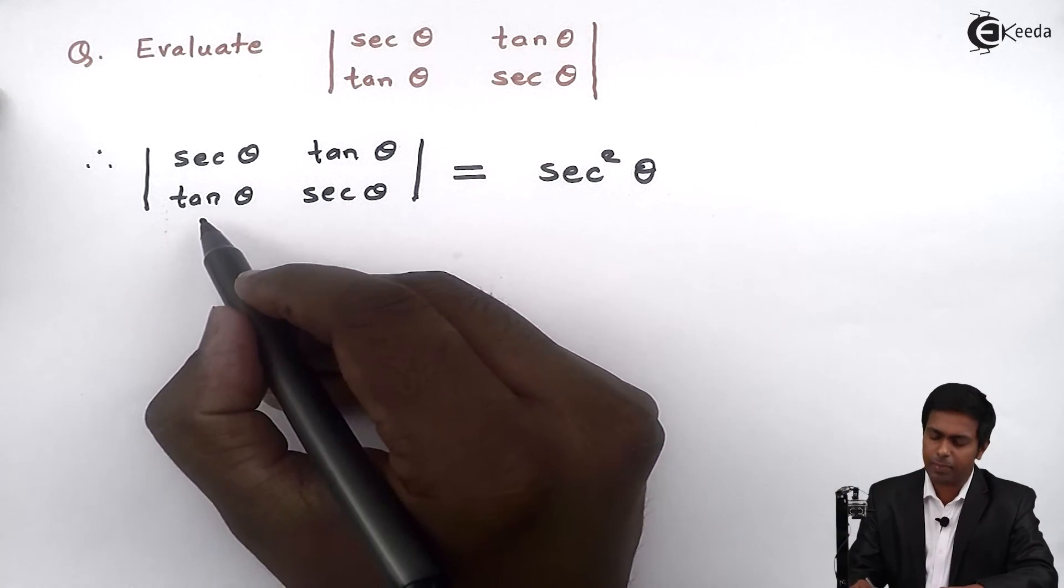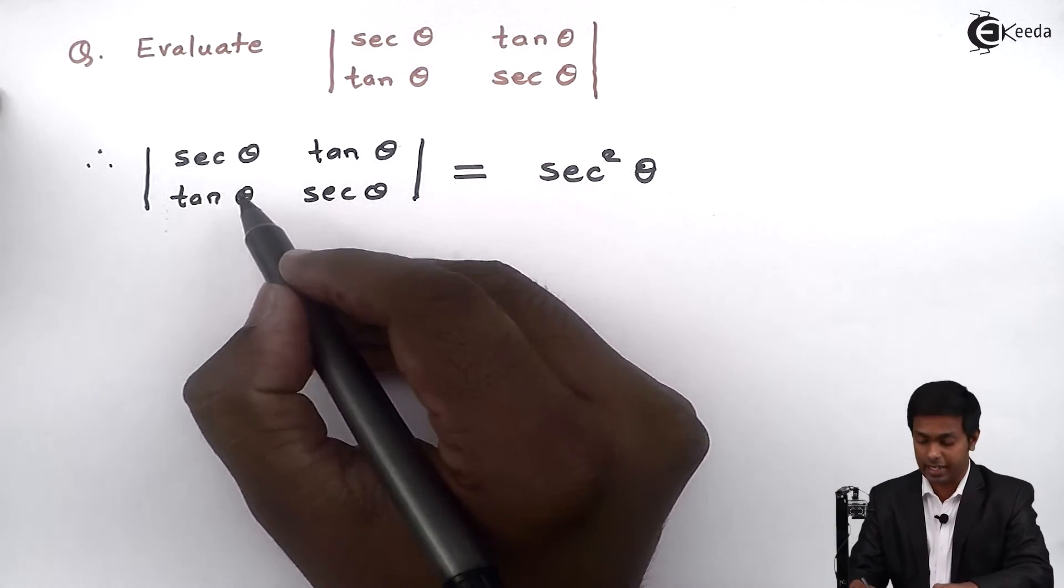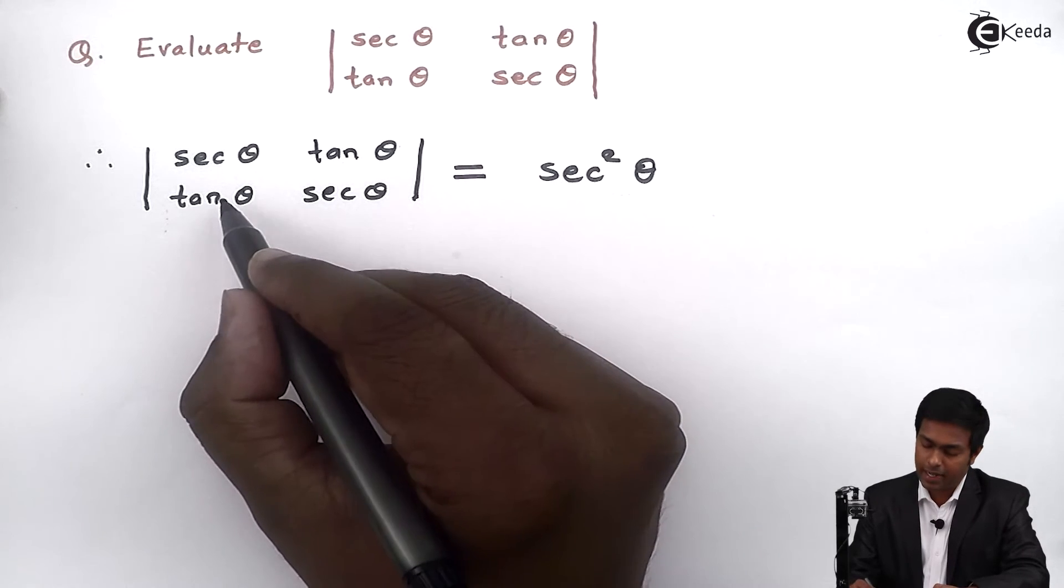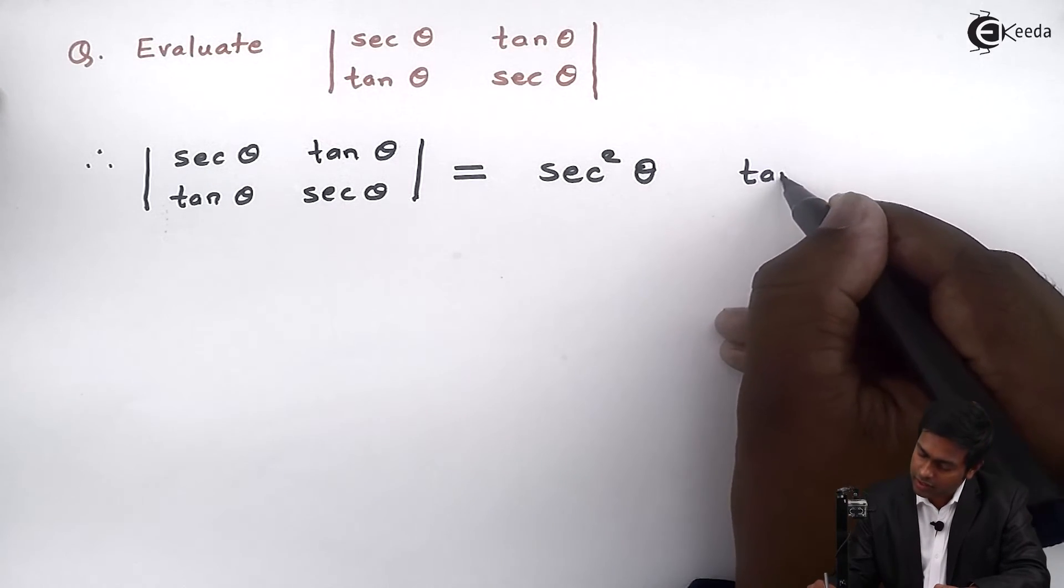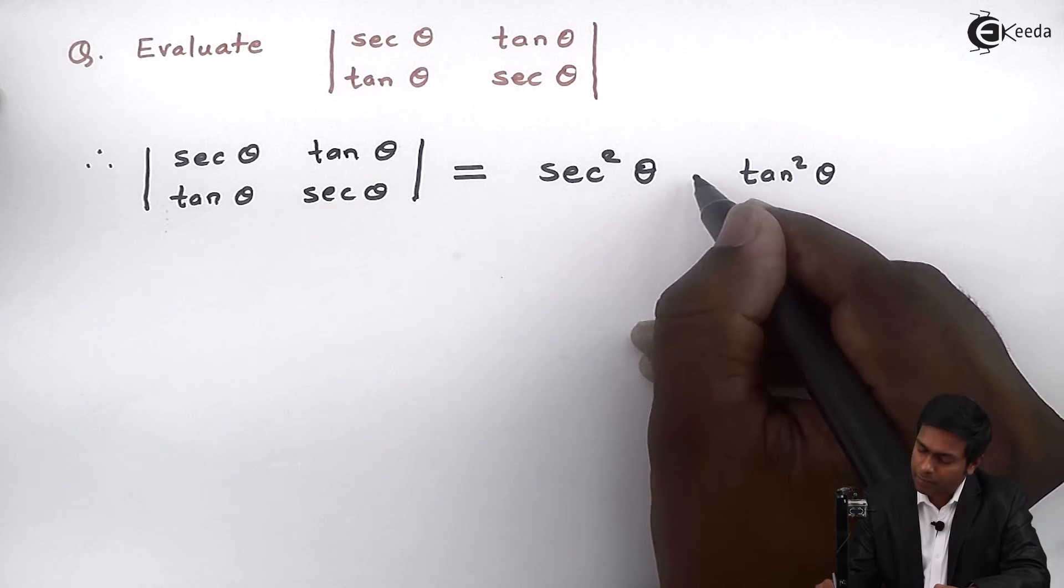Similarly by performing the multiplication of the elements which are on the secondary diagonal we will get tan theta into tan theta, that is tan square theta, and we will subtract the values.